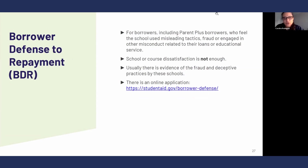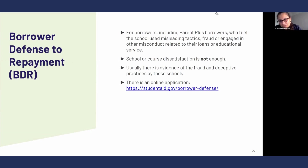Borrower defense to repayment: if you paid for a dependent's college and the college was kind of a fraud — meaning they were deceptive, for example, saying they have a bunch of scholarships and you're really not going to have to take out many loans, and then you end up with high loan balances — be aware that for-profit schools are probably the most involved in this. The federal government through this program says we know you went to a school that defrauded you. You apply online through studentaid.gov and you could potentially have those loans discharged, even if you were the parent borrower.